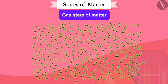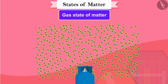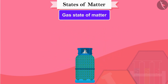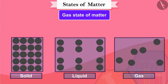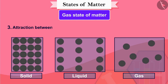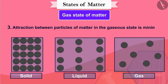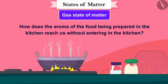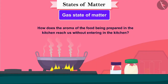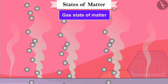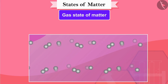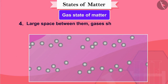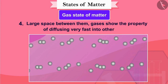The large volume of gas can be compressed into a low-volume cylinder due to its high compressibility and can be easily sent from one place to another. This compressibility is possible because the attraction between particles of matter in the gaseous state is minimal. How does the aroma of food being prepared in the kitchen reach us without entering the kitchen? The smell of food mixes in the air and spreads from the kitchen to reach us, because of the high speed of particles and large space between them. Gases show the property of diffusing very fast into other gases.